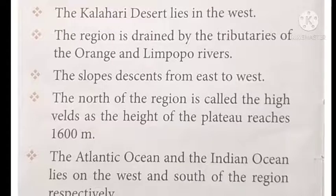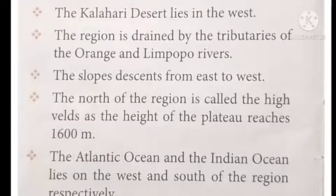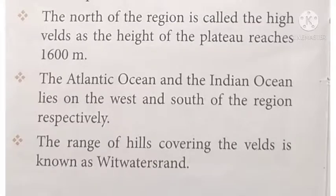The slopes descend from east to west. The north of the region is called the High Velds.